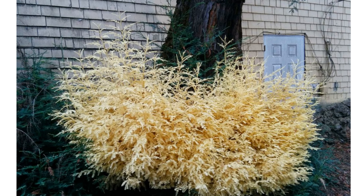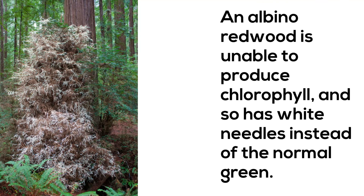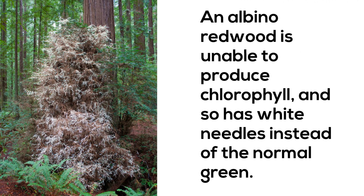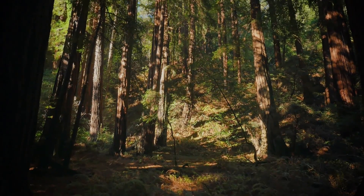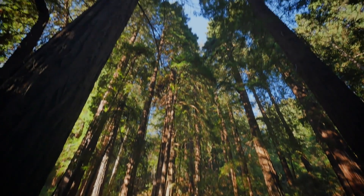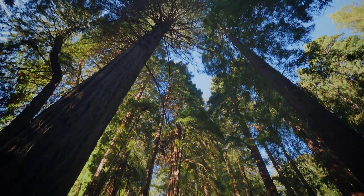Another parasitic plant is the albino redwood. An albino redwood is a redwood tree which is unable to produce chlorophyll, so it has white needles instead of the normal green. It survives by obtaining sugar through the connections of its roots to those of its neighboring normal redwoods. Not very nice.